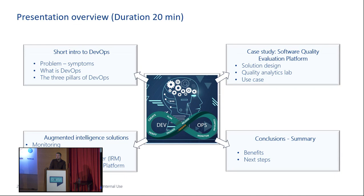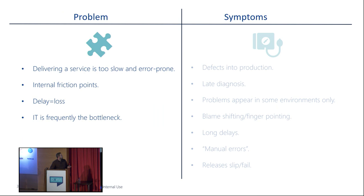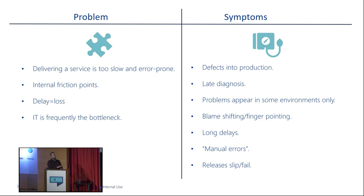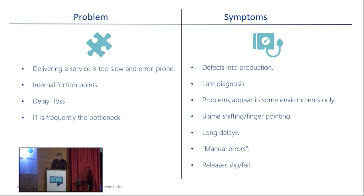DevOps tries to address the problem that the process of delivering a service from inception to its users is usually expensive and error-prone. IT is frequently the bottleneck in the transition from concept to cash. The symptoms of this problem include release of defects into production, lack of early diagnosis, blame shifting, long delays waiting for responses or resources from other teams, and frequent manual errors introduced throughout the process.